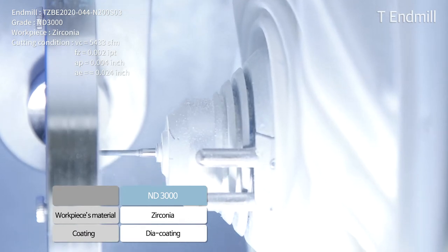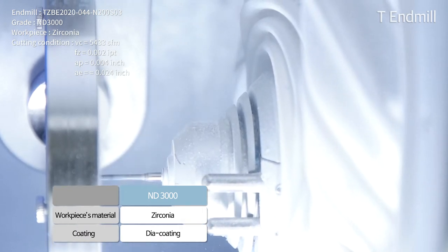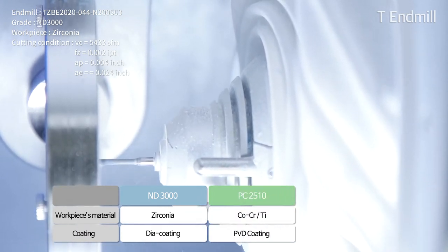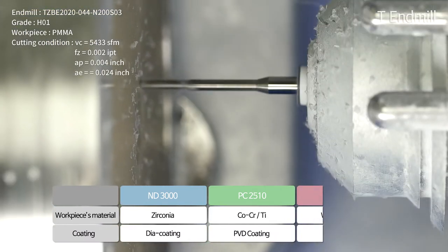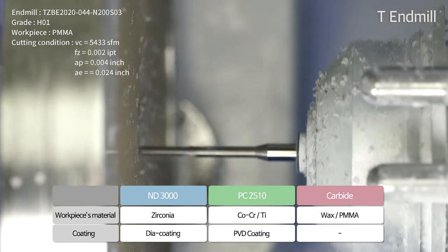Select our diamond coating grade ND3000 for zirconia machining, PVD coating grade PC2510 for metal machining, and non-coated grade for wax and PMMA machining.